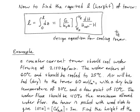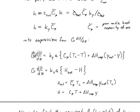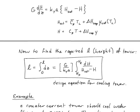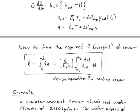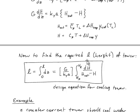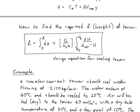The required tower height L is found by integrating the design equation. The parameter G/(Ky·A) naturally emerges and is called the Height of an Enthalpy Transfer Unit (HTU). Rearranging gives: L = (G / Ky·A) · ∫ dH / (H_sat − H), integrated from the inlet gas enthalpy at the tower bottom to the outlet enthalpy at the top. This integral must be evaluated numerically but yields a prediction for the tower height needed to cool a given water stream by a given amount.